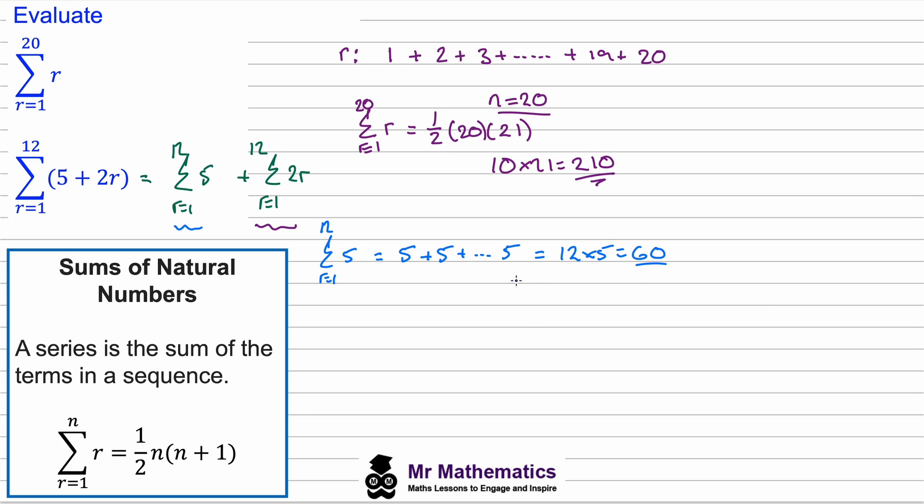Okay, now if we look at this summation between the sum of r equaling 1 and 12 of 2r, well when r equals 1 we will double that to get 2, when r equals 2 we will double that to get 4, when r equals 3 we will get 6, and we would add up all the terms until r equals 12 then you'll get 24.